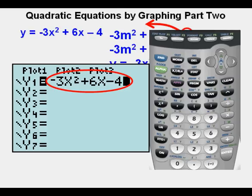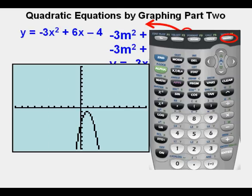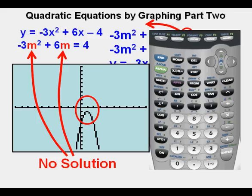He places the function in the y equals view, then presses graph for zoom 6. Since the curve of the parabola does not cross or touch the x-axis, there is no solution to this equation, or sometimes it's called no real solution. Amongst the real numbers, there is no value of m that makes this equation a true statement.